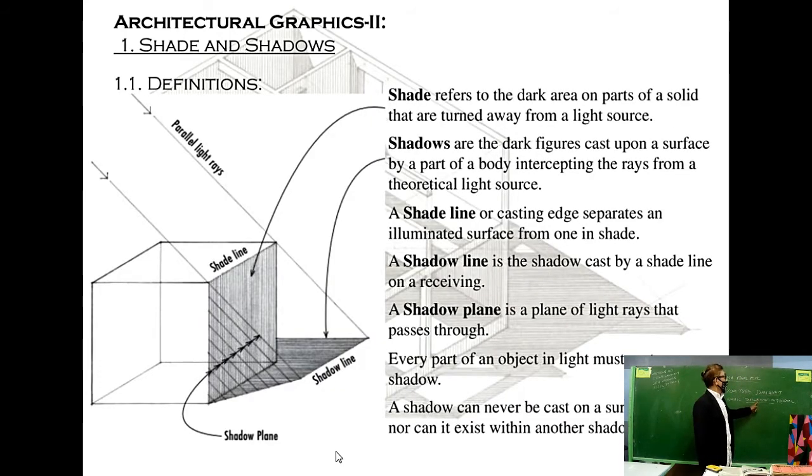Kung tayo ay gagamit ng shade and shadows rendering, we assume na meron tayong 45 degrees. Yan ang pinakamagandang degree of casting shadow. Para magkaroon tayo ng shadow, we project 45 degrees line sa object, halimbawa dito sa cube. So dito makikita niyo kung paano lagyan ng shadow ang cube.